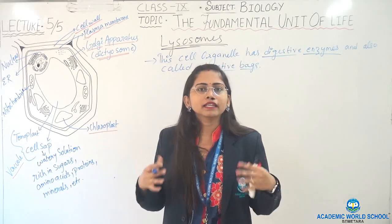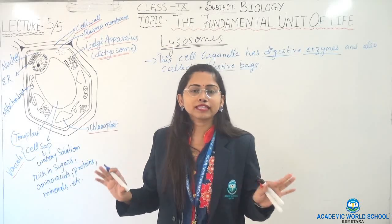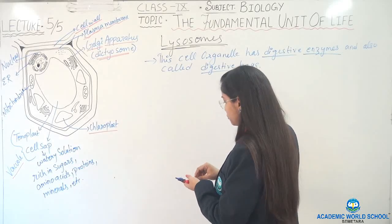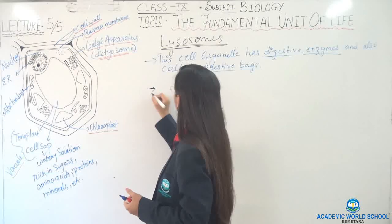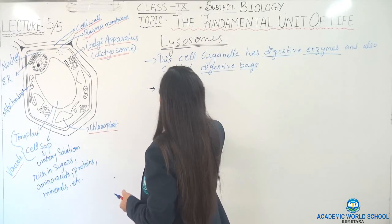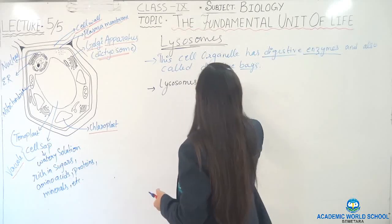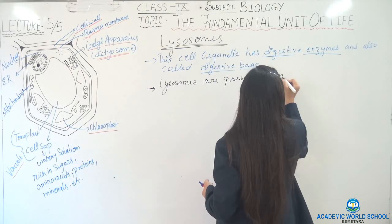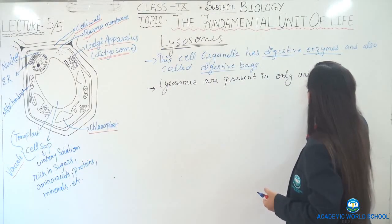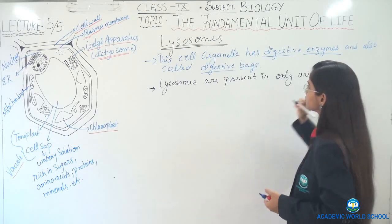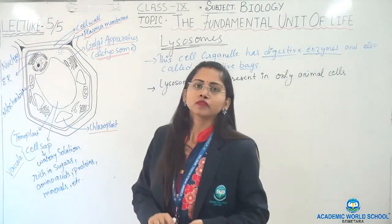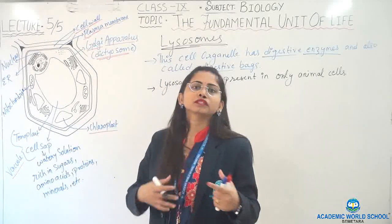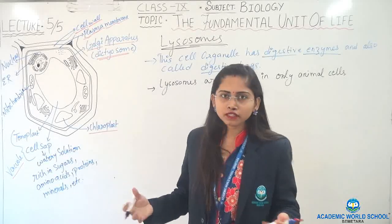The lysosome helps for clearing up waste which is near to the cell or which is produced by the cell. It is called a digestive bag. Lysosomes are present only in animal cells; they are not present in plant cells. Now, there is metabolism happening in the body — metabolism means the formation or breakdown of substances in the body. During all this metabolism, it can happen that the cell gets ruptured.